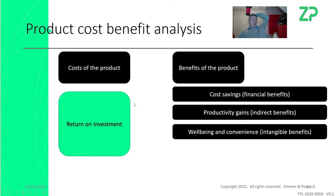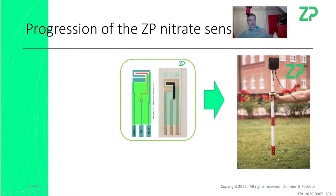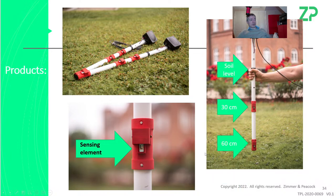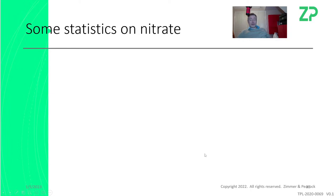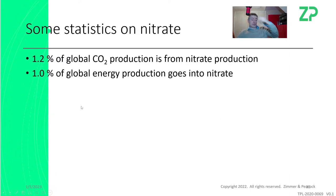A cost-benefit analysis is quite close to a return on investment — ROI. Let me do a case study. ZP makes screen-printed electrodes converted into environmental sensors. Here's an example: a nitrate-in-soil system. Our nitrate sensor can reduce global CO2 — a lot of CO2 comes from nitrate production — and reduce global energy consumption. But for the farmer as customer, those are indirect costs. What might really intrigue the farmer is that 67% of nitrates are probably wasted.